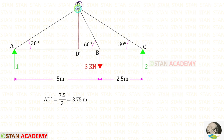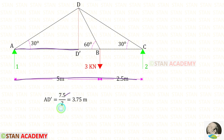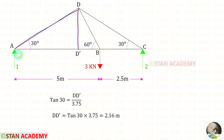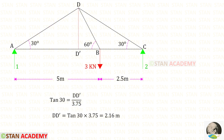From the point D let us drop a vertical line. Let us keep this point as D dash. We can find the length of AD dash, that will be 7.5 upon 2, which gives 3.75 meters. We need to find this height. Let us take this triangle and apply the tan theta formula, that is opposite side by adjacent side. Here the opposite side is DD dash and the adjacent side is AD dash, which we found to be 3.75. For DD dash we will get 2.16 meters.